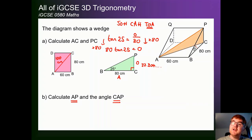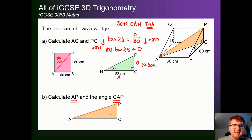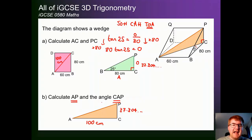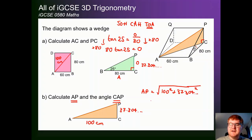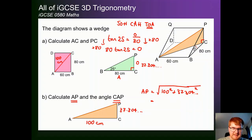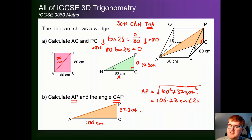Now we know that CP, we can focus on AP. Notice we have a right angle triangle that goes across the shape — this angle here is a right angle. Bringing it out into 2D: AC is equal to 100 centimeters, and CP is 37.304. To work out AP we use Pythagoras in one smooth calculation: the square root of 100 squared plus 37.304 squared. Putting that into the calculator gives us AP equal to 106.73 centimeters to 2 decimal places.